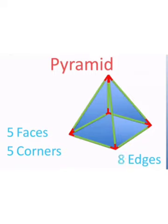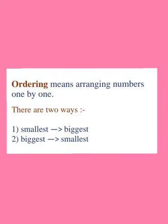Now let us revise about ordering of numbers. Ordering means arranging numbers one by one — from smallest to biggest or from biggest to smallest. To arrange numbers in any order, we first need to compare them. So we always first compare all the numbers and then order them.